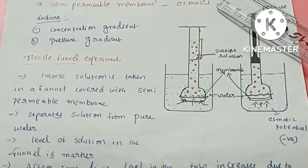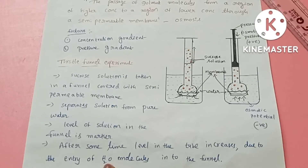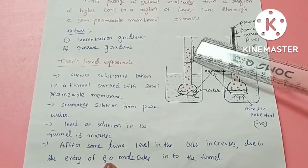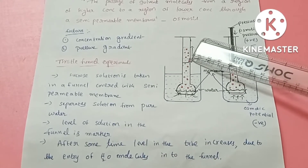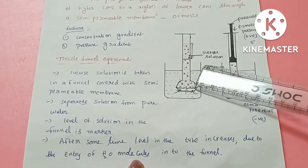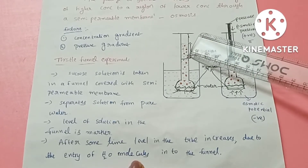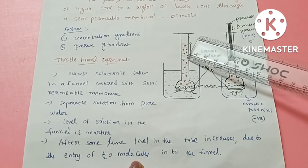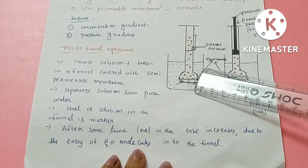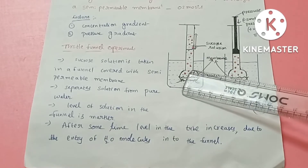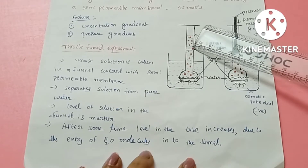To demonstrate osmosis, there is an experiment called the Thistle Funnel Experiment. A funnel is filled with sucrose solution and its mouth is covered with a semi-permeable membrane. The level of the sucrose solution is marked. This setup is placed in a beaker of pure water.